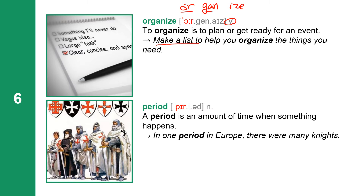Next one: period. Period has three syllables: P-E-R-I-O-D. Period is a noun. A period is an amount of time when something happens. In one period in Europe, there were many knights. This K is silent — knight.